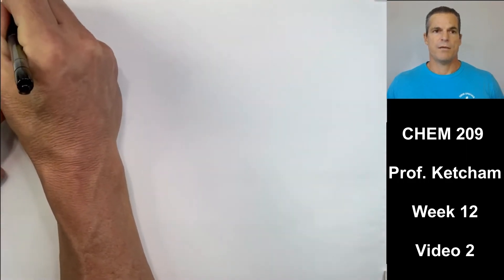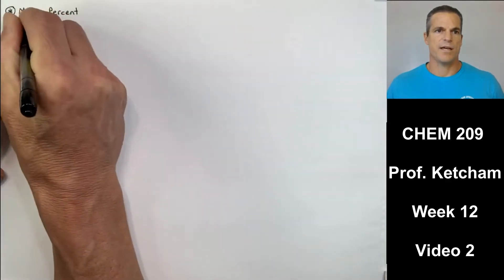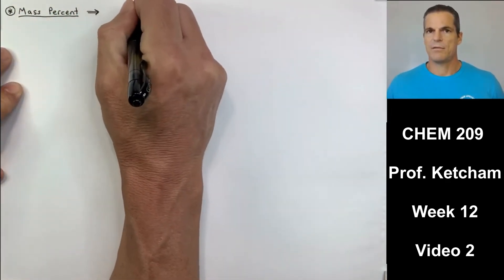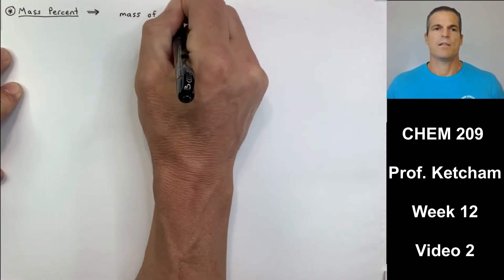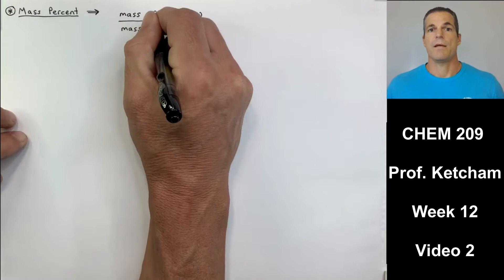All right. Video number three for week nine. This is it. This is the end of it here for week nine. So I got two new concepts to introduce: mass percent and then dilutions. And then I'm going to go through some sample problems from your homework for chapter nine.